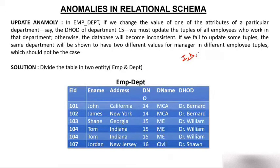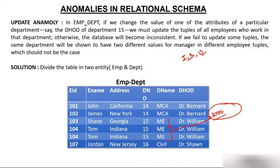Now the last anomaly: update anomaly. In this table, the mechanical department has 3,000 employees. Dr. William is the HOD, so Dr. William's name is repeated in front of all 3,000 employee rows. Now suppose Dr. William leaves the organization and Dr. James joins in his place. I have to update the imp_department table — and I have to update it 3,000 times. This is inefficiency.